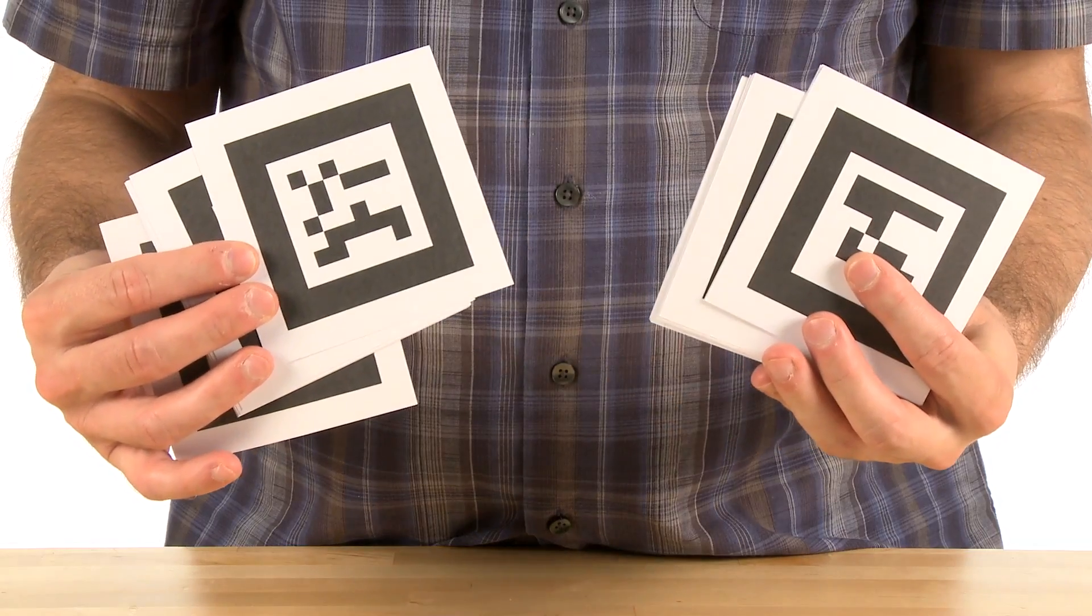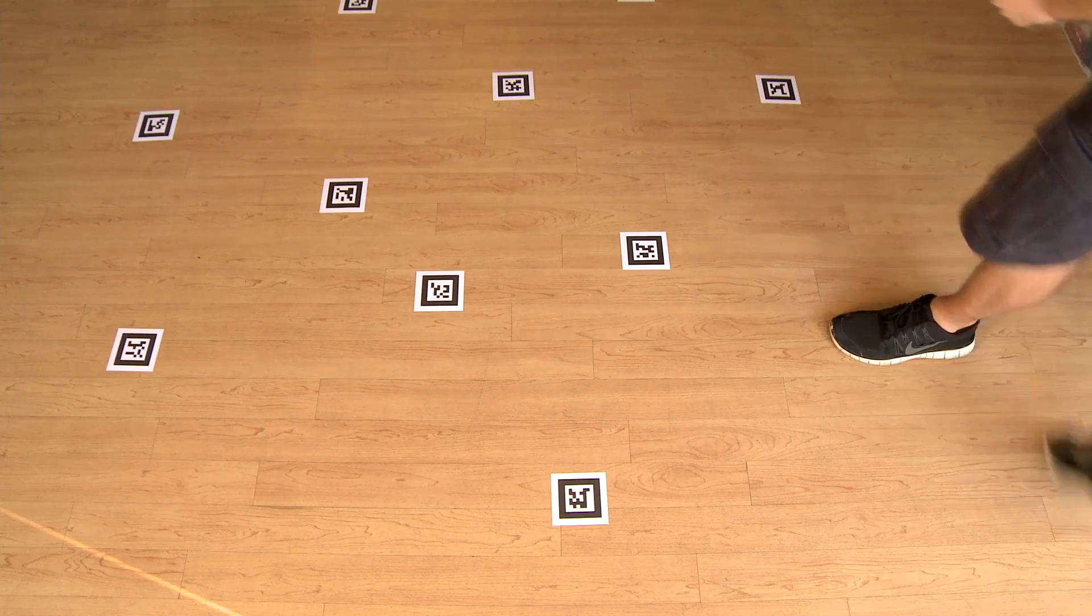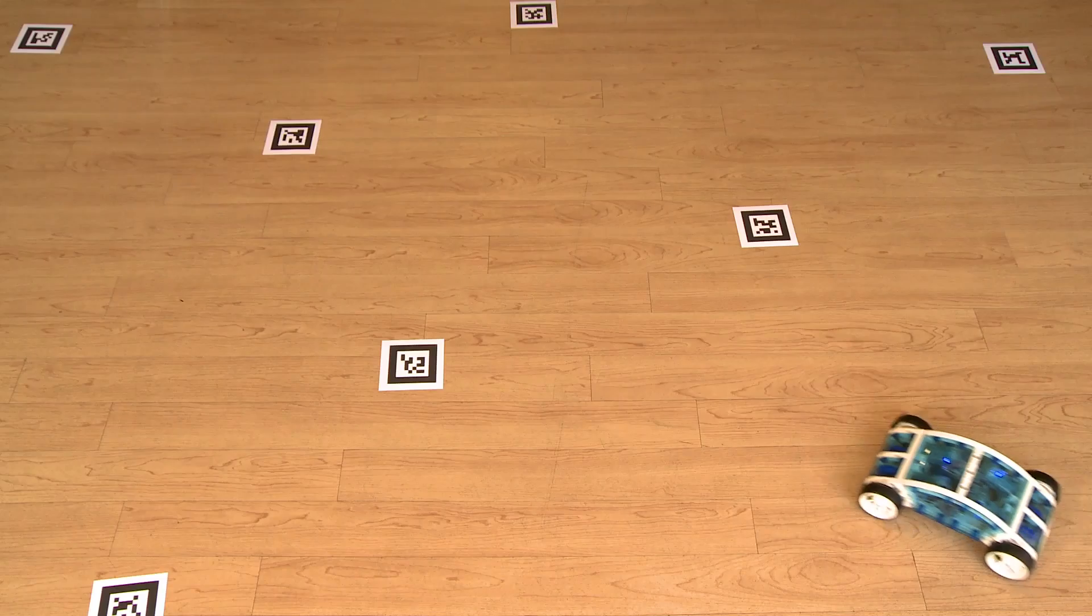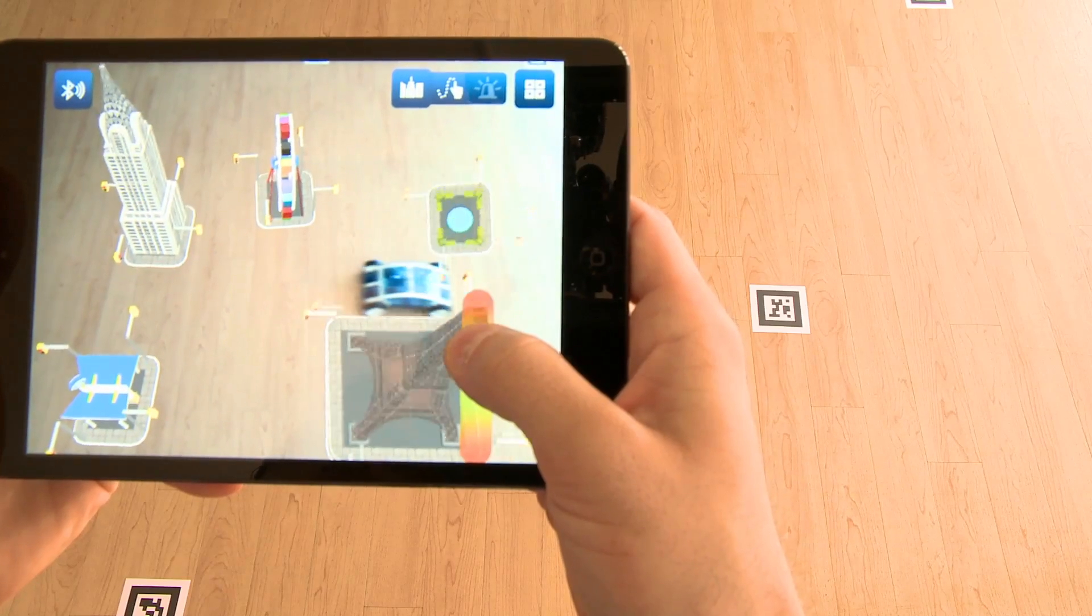Plus, by placing the included augmented reality code cards around your room, you can control your vehicle virtually through your own city.